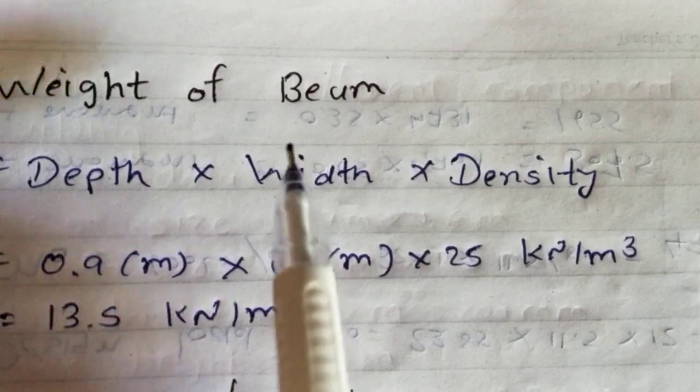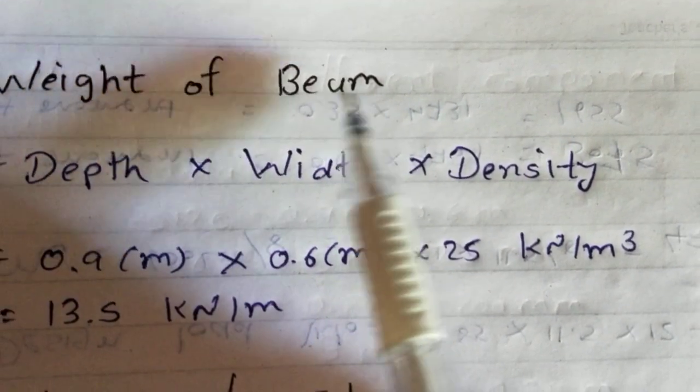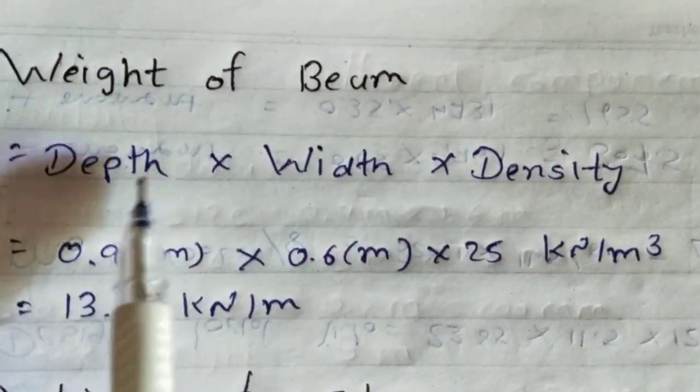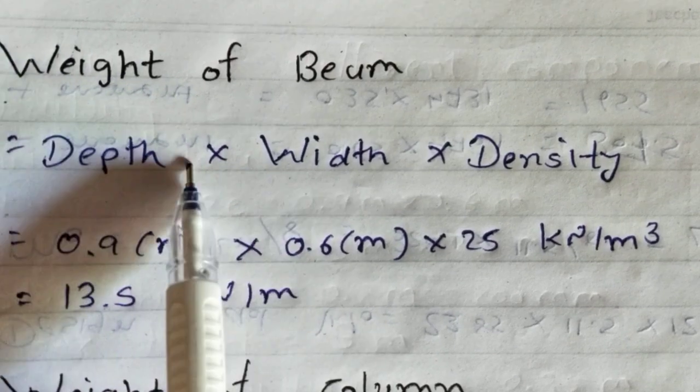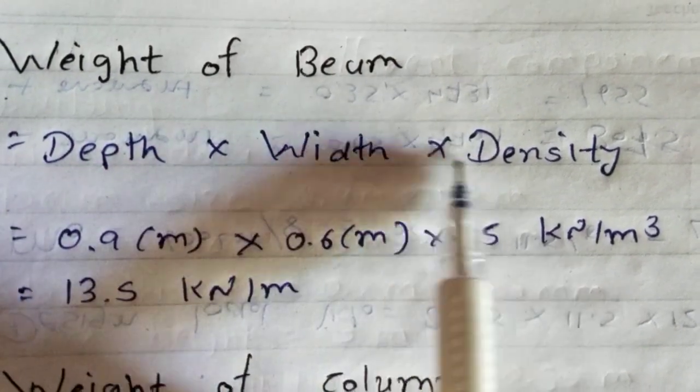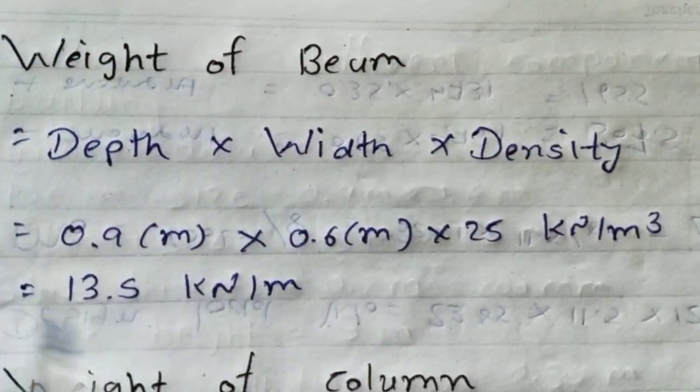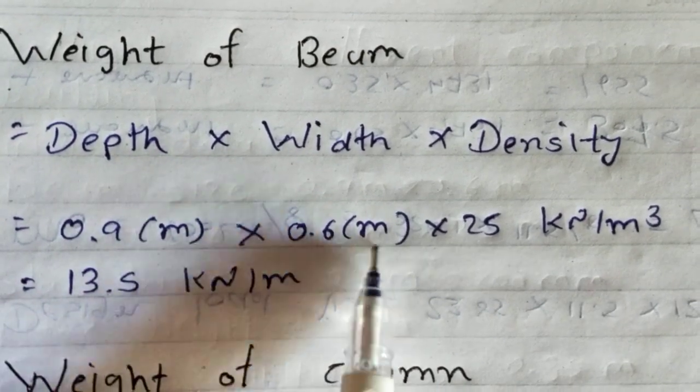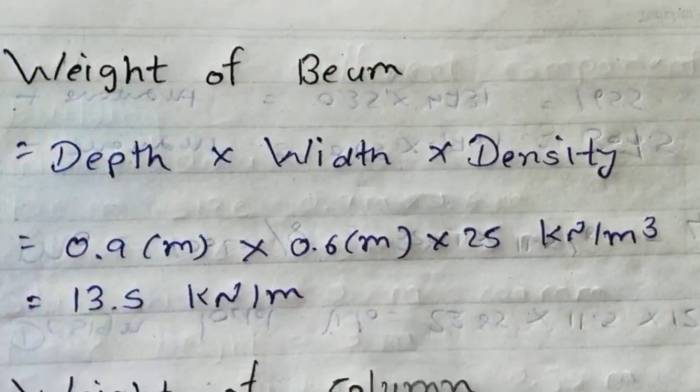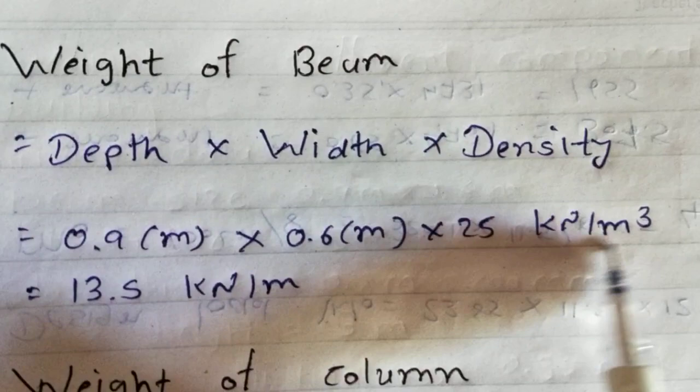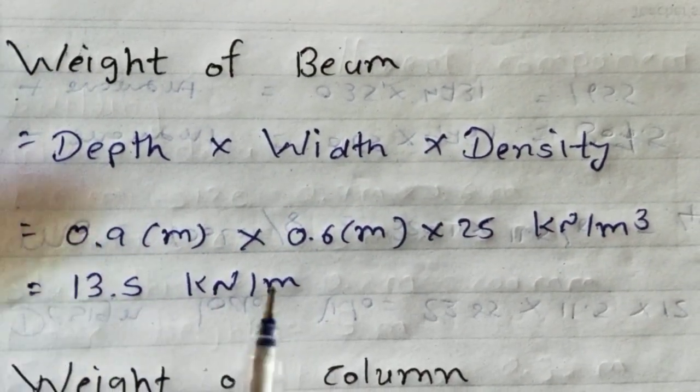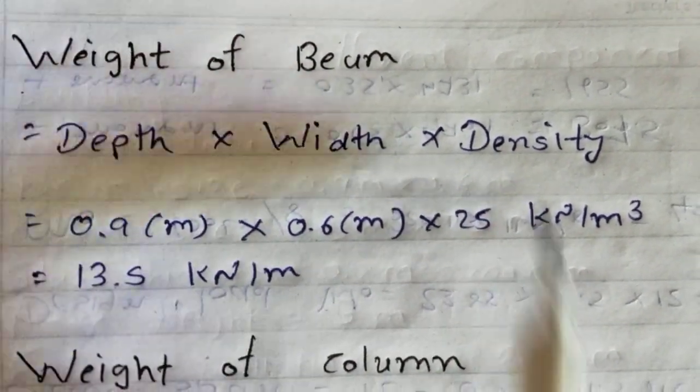Now we will calculate weight of beam. Weight of beam including depth of beam, width of beam, into density. This is 0.9 meter, 0.6 meter, and 25. So 13.5 kN per meter. This is per meter weight of beam.